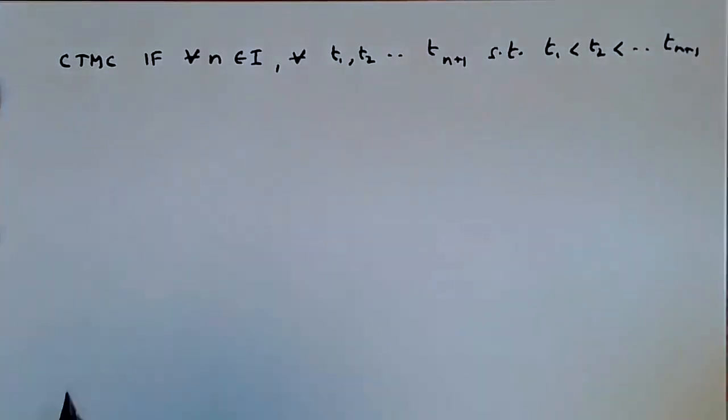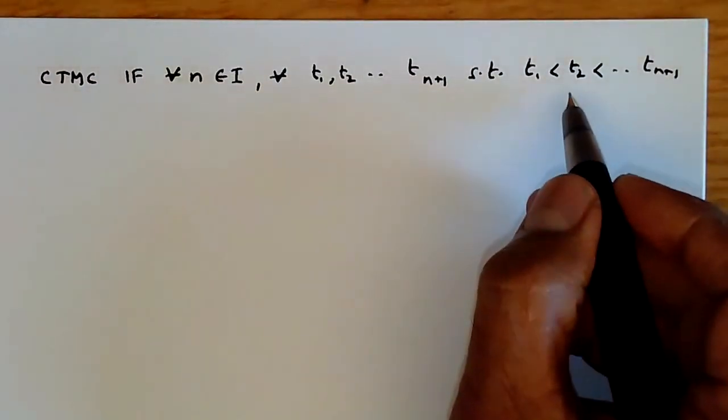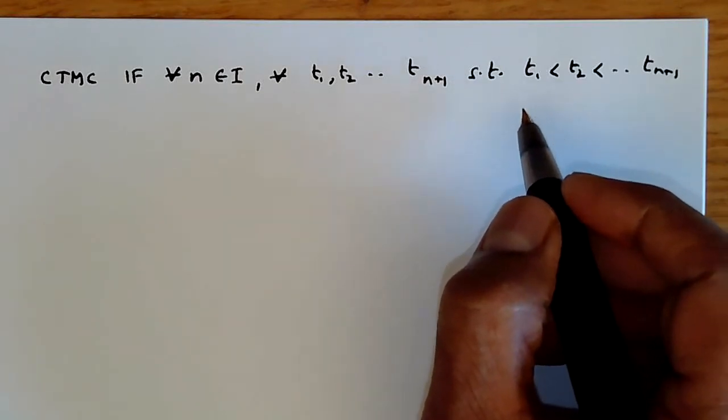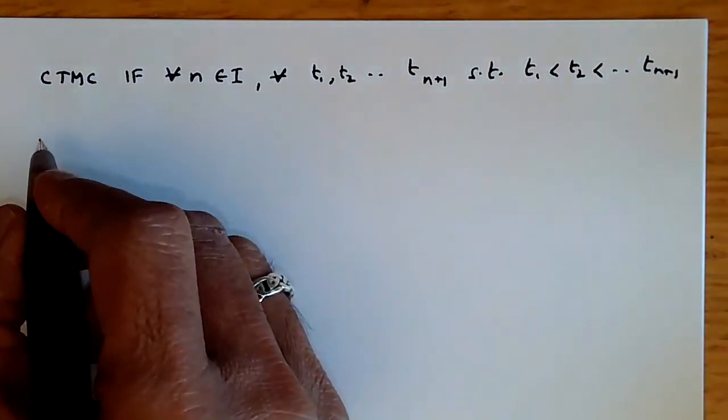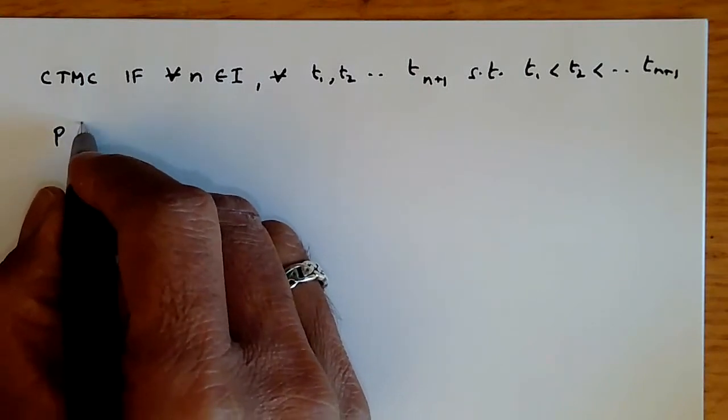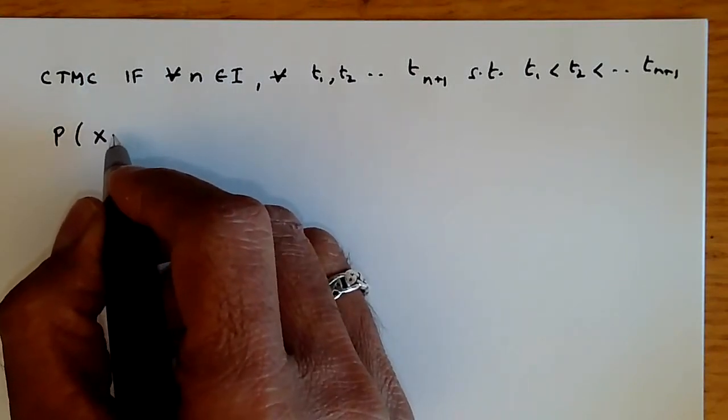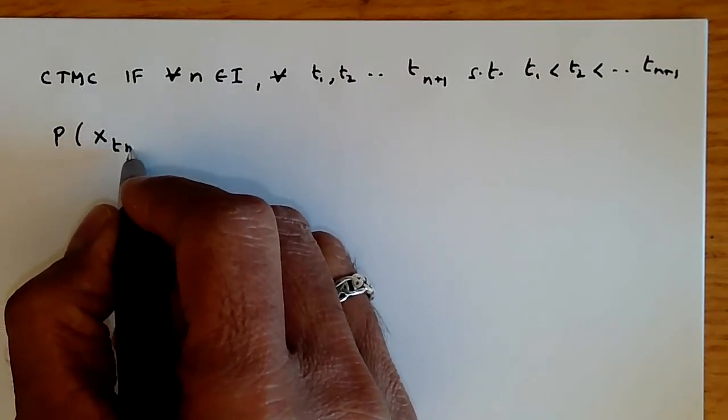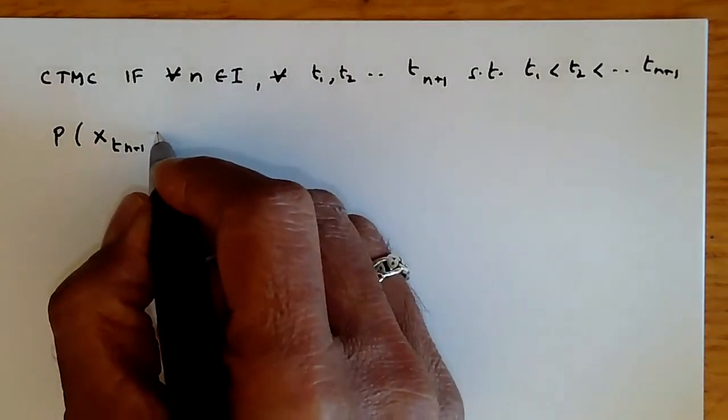So basically, this is the set of times at which the stochastic process transitions from one state to another. The probability that the random variable X_{T_{n+1}} is equal to j,